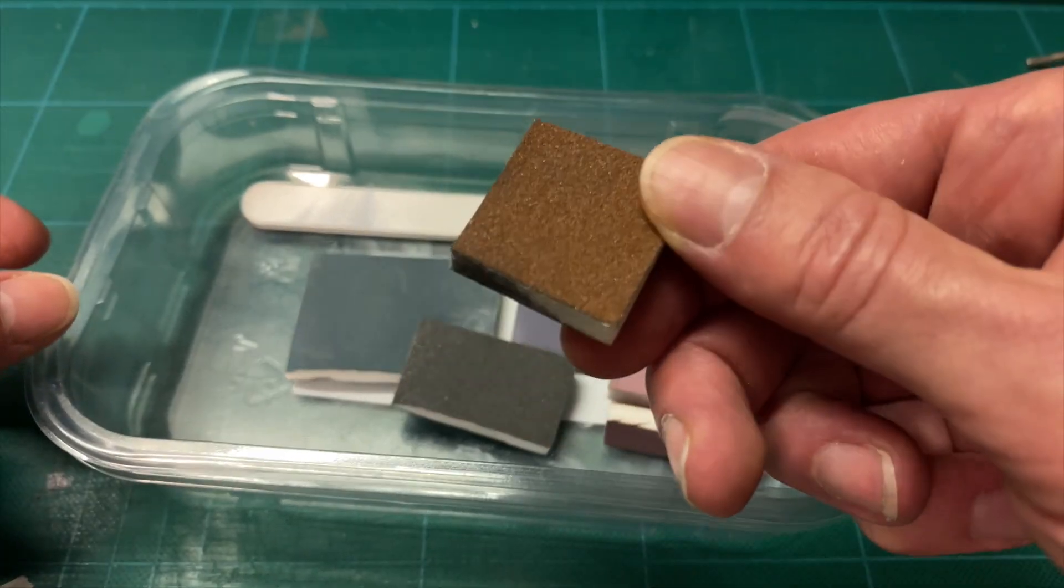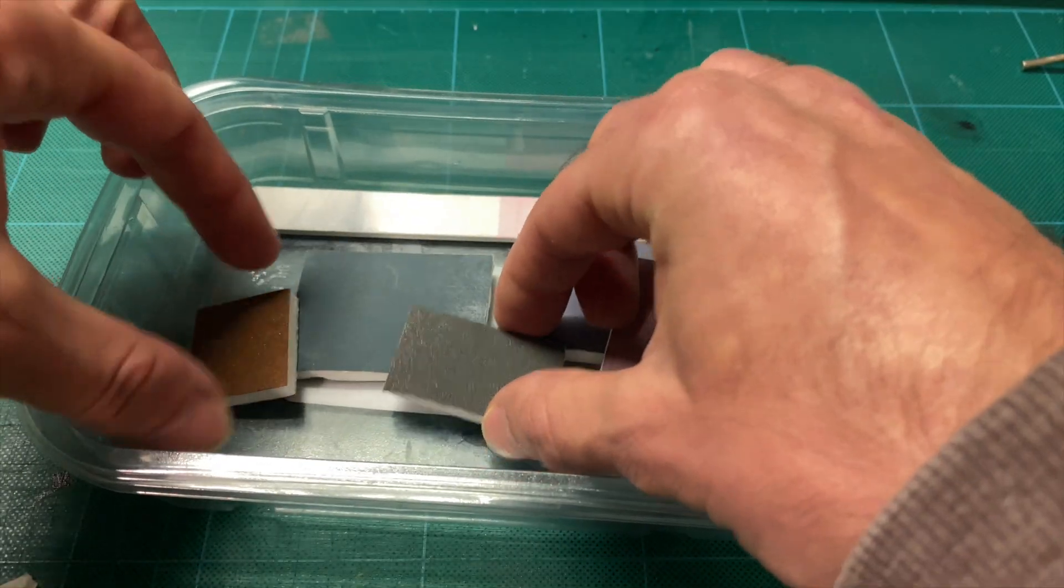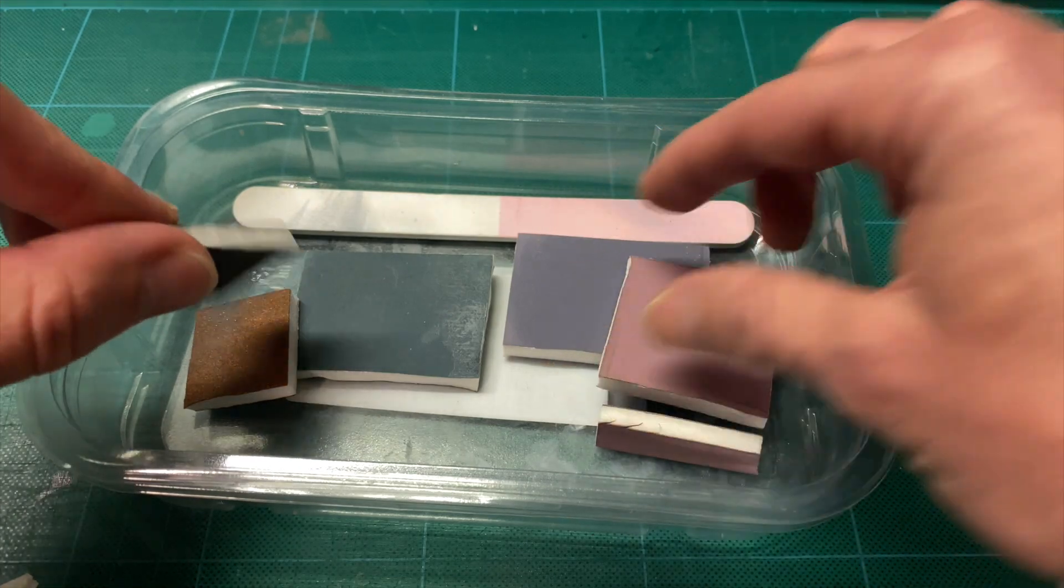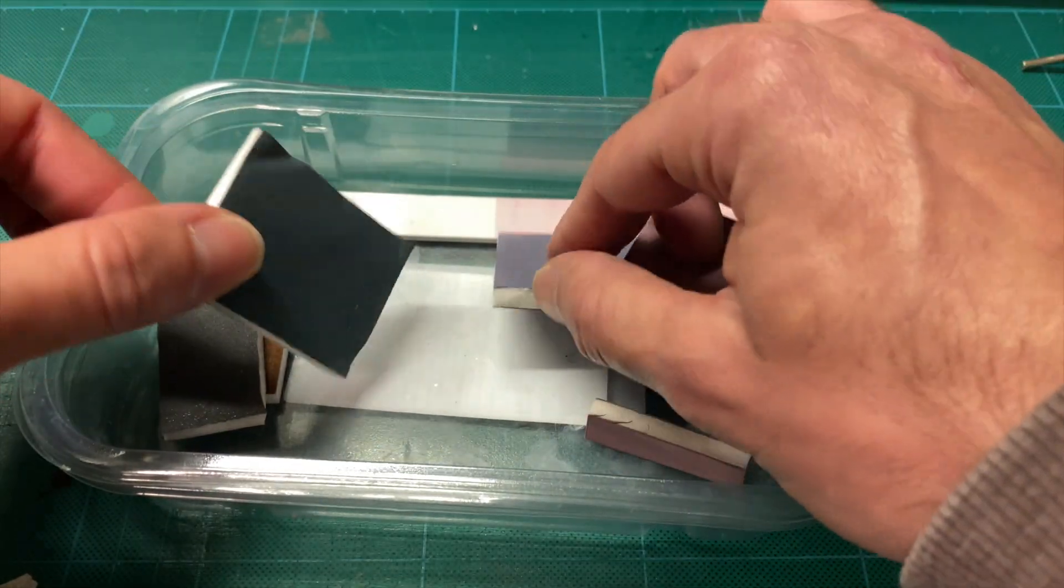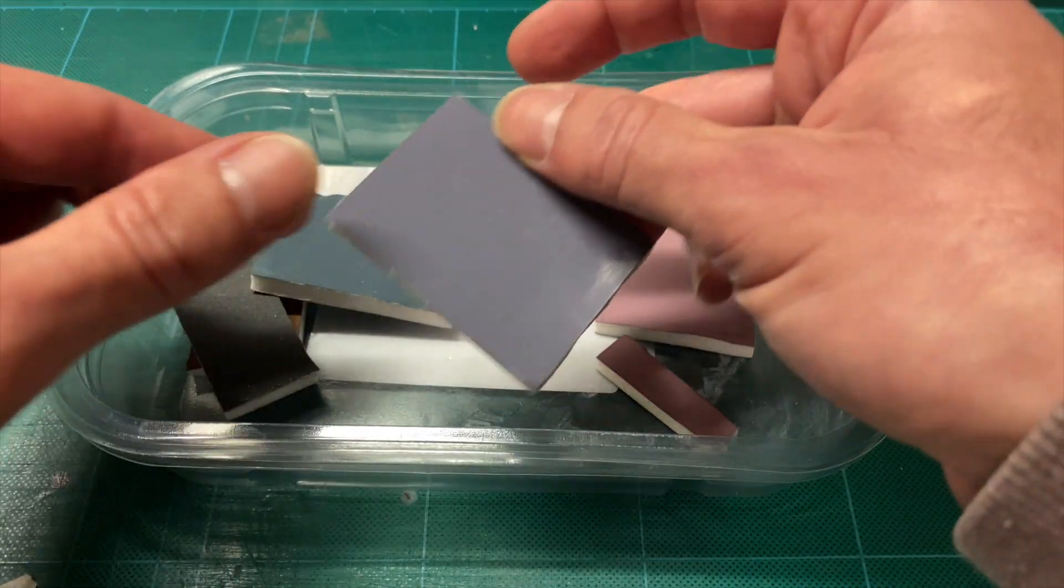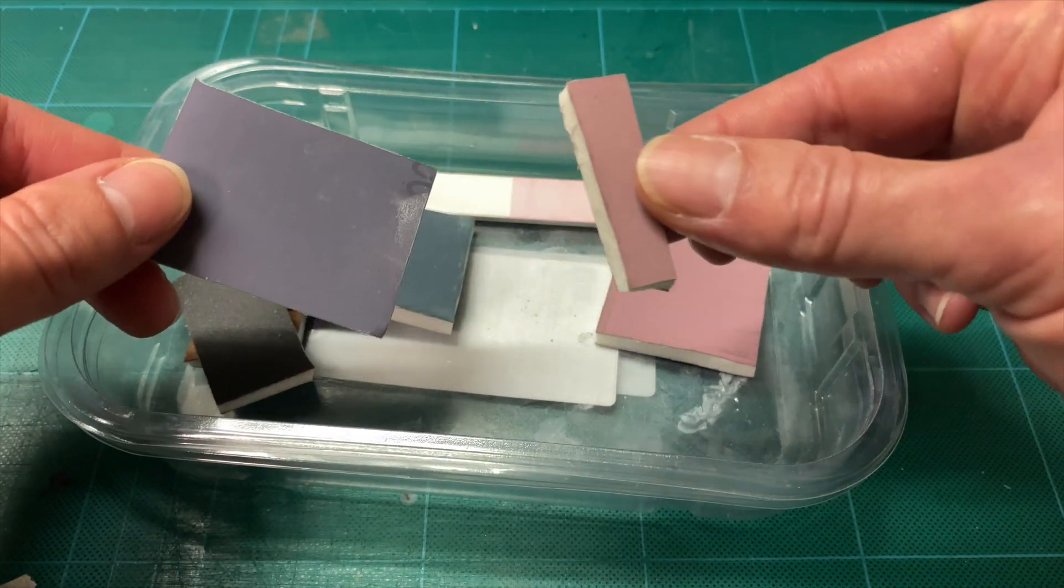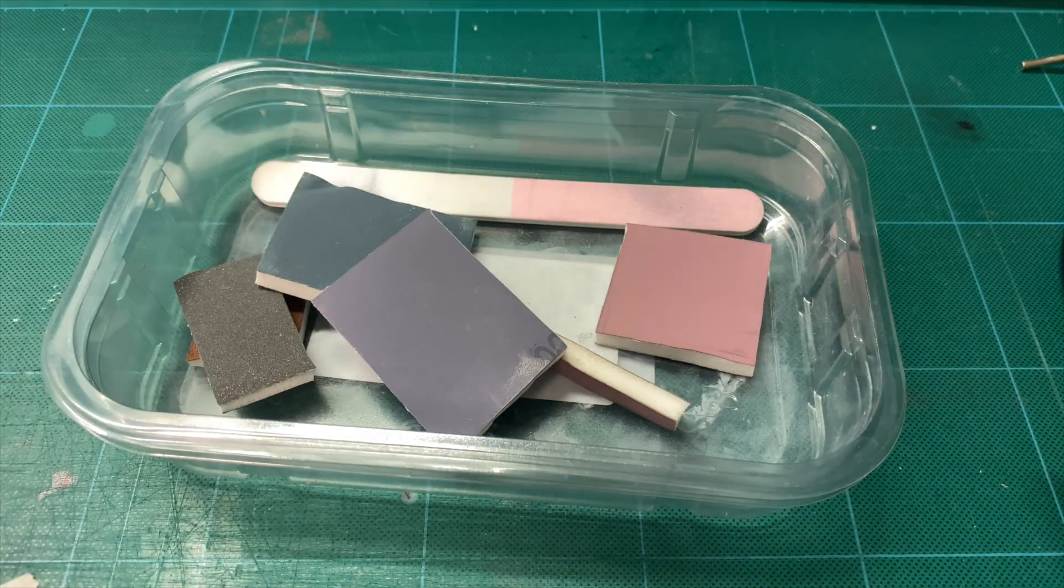The main tool I'll be using is a set of micro mesh soft pads. I'll put a link to them in the description below. These come in different grid sizes so you can start with a rough sand and continue with higher value grid sizes to get a final result.